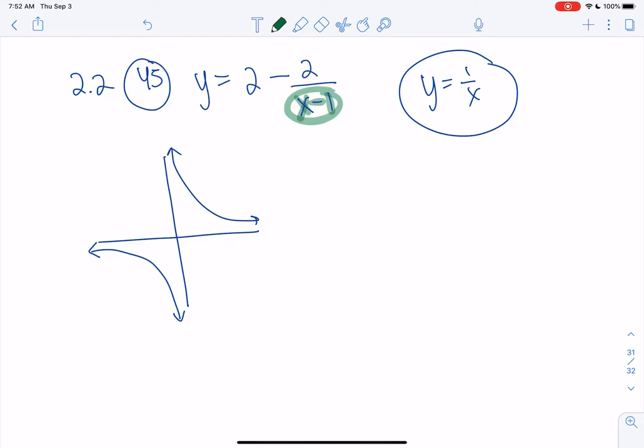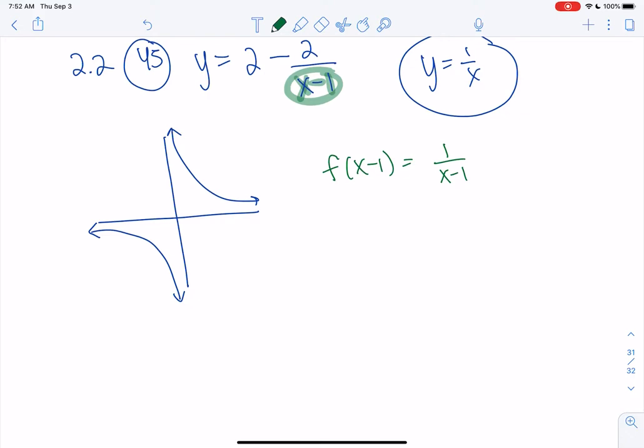So if I do the x minus 1, that's like an f of x minus 1. That would be 1 over x minus 1 here. That's only a single transformation, so that transformation is a horizontal transformation or a horizontal shift.